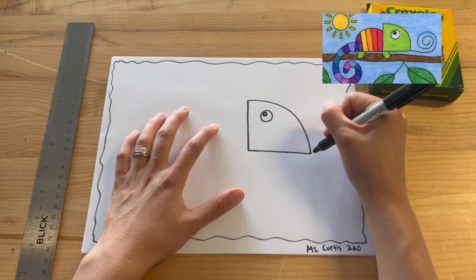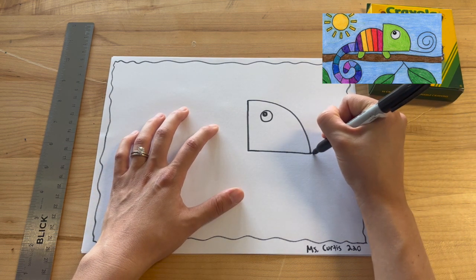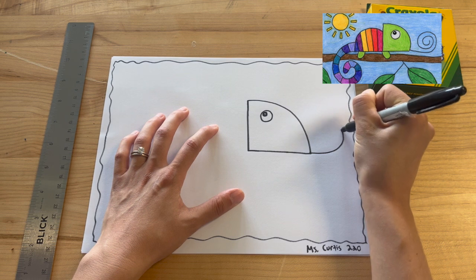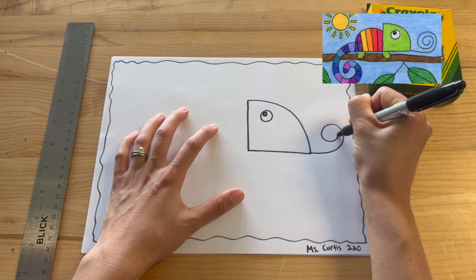The next thing I'm going to do is in the front, I'm just going to make a line that comes out and loops around and curves. And this is going to be the lizard's tongue.